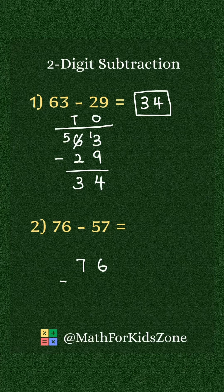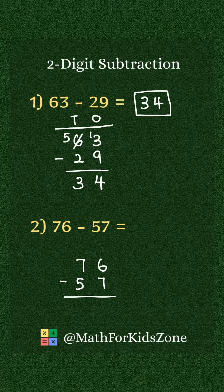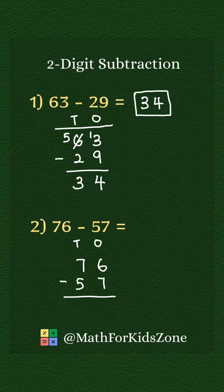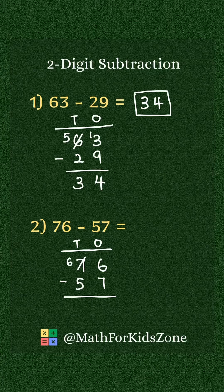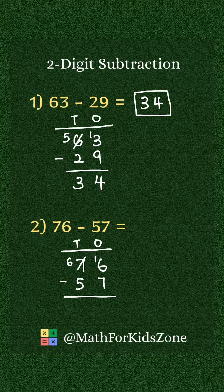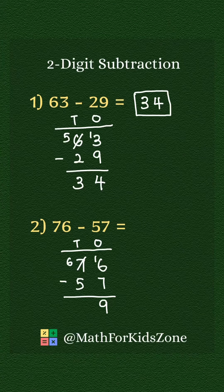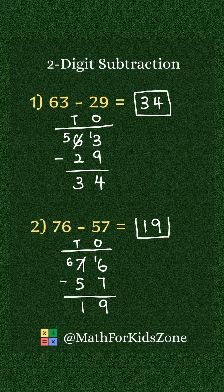76 minus 57. 10's on the left, 1's on the right. 6 minus 7, we need to borrow 10. Left 6 10's, that makes 16 minus 7 is 9. 6 minus 5 is 1. Answer is 19.